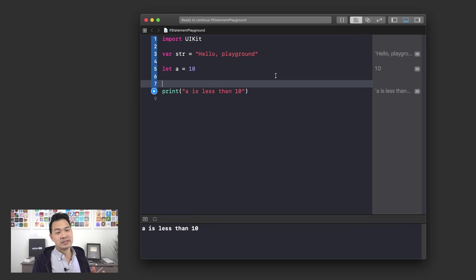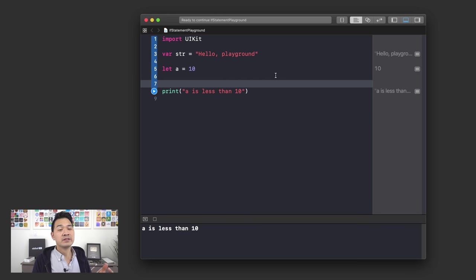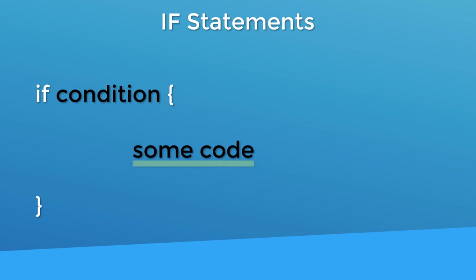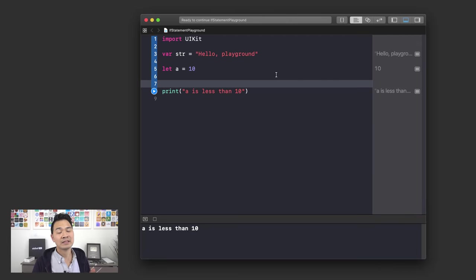An if statement starts with the if keyword followed by a space and then your condition to test. Then you have a space and a set of braces. Inside those braces, you put the code that is only going to run if the condition evaluates to true. If that condition turns out to be false, the code inside the braces will not be run. So I'm going to use the if keyword followed by the condition: a < 10. Then I'll open an opening brace and put the print statement inside.